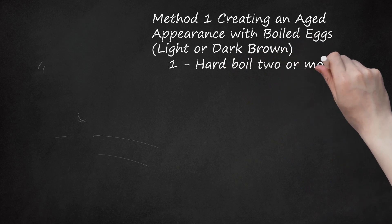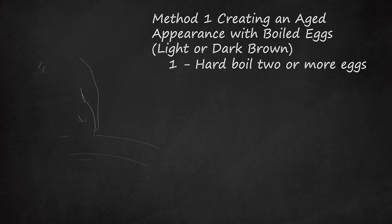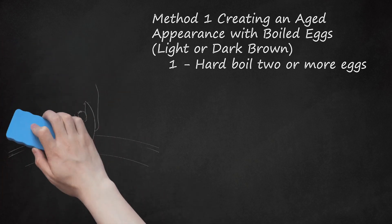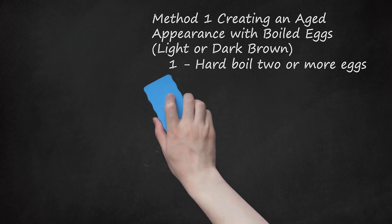Step 1: Hard Boil 2 or More Eggs. Two or three eggs should be plenty unless you have a large amount of copper to oxidize. Place them with their shells intact in a pot of water and bring to a boil for at least 10 minutes. Don't worry about over-boiling them. In fact, that over-done greenish ring and sulfur smell is exactly what you need, since the sulfur will alter the appearance of your copper.